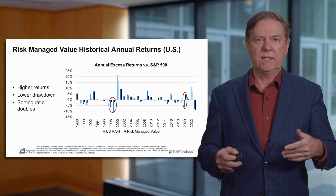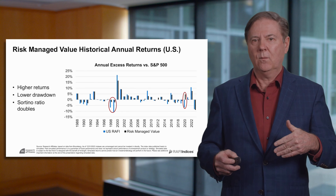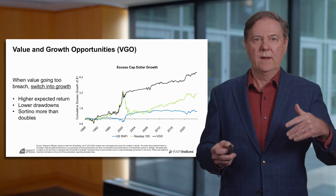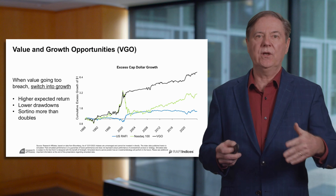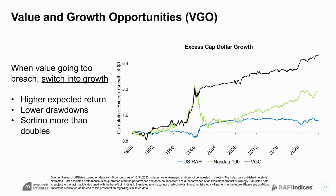This is a value application where we're switching between value and the benchmark, which is cap weighted. But what about taking advantage of the fact that value and growth are negatively correlated? So if value is expected to underperform, switch into growth. We call this value and growth opportunities. The black line in the graphic shows that the expected returns are much higher than a standalone value or standalone growth investment, the drawdowns are sharply reduced, and the Sortino ratio in this case almost triples.